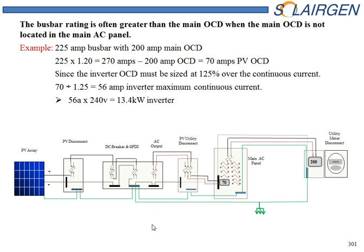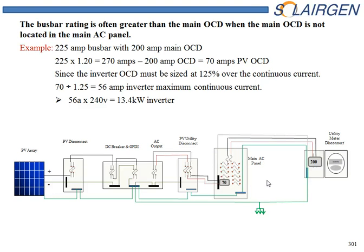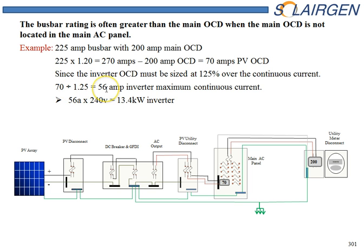Option two is the same option but with a different situation. In this case, we have the overcurrent device outside at the meter base. The main loads panel bus bar does not have an overcurrent device in it. Often when you buy this panel separately without an overcurrent device, the ampacity is greater than 200 amps. In this example, we're using a typical load center rated at 225 amps. 225 amps times 120% gives us 270 amps. Subtract the 200 amps as we did before, and this leaves 70 amps — giving us a much higher capacity for our inverter. So we have a 70 amp overcurrent device, and again we divide by 125% to find the continuous current of the inverter, giving us a much larger inverter input capacity.